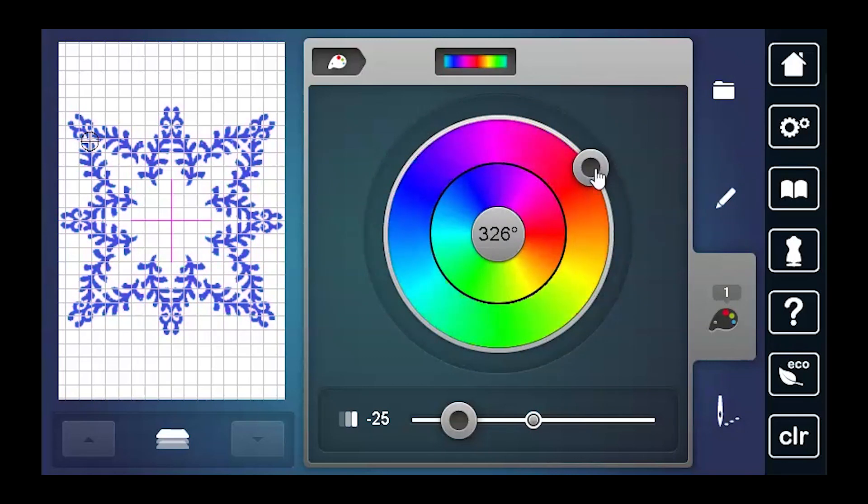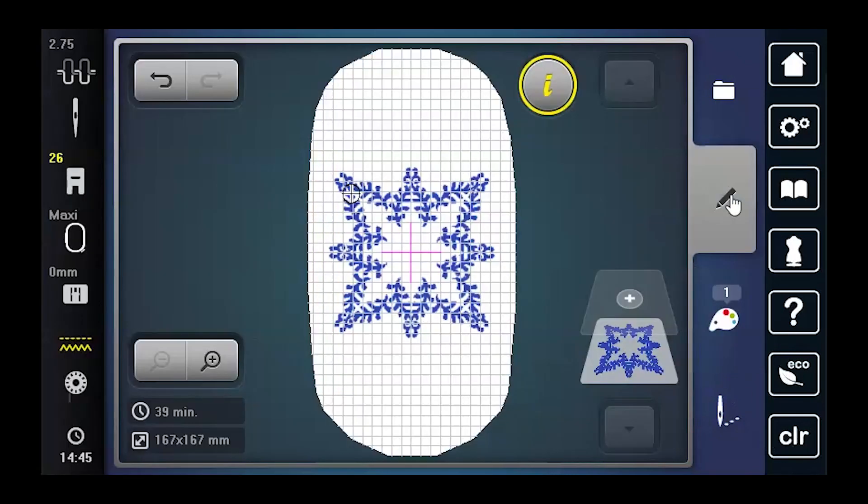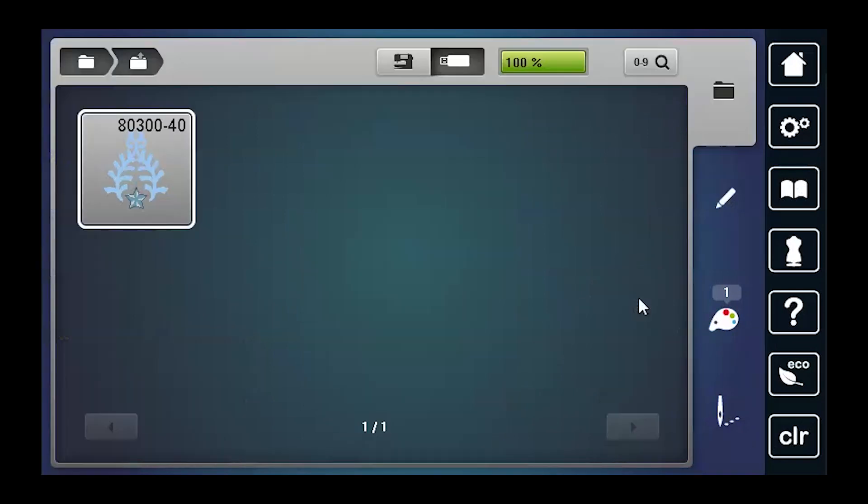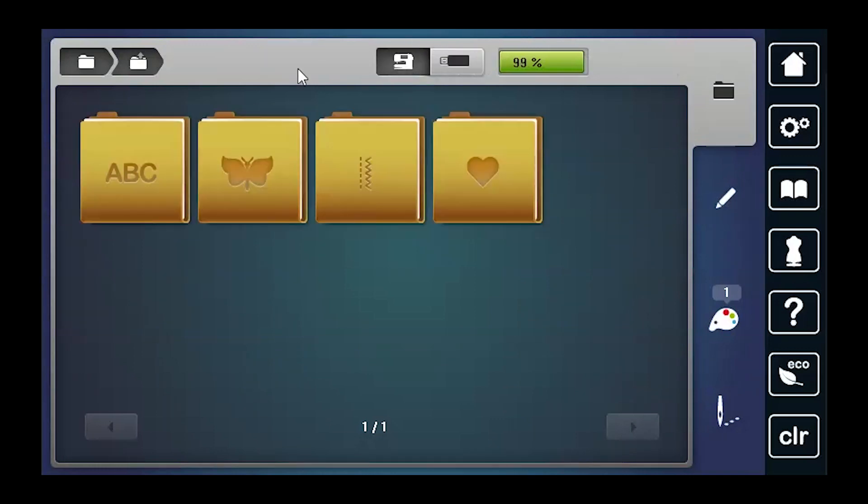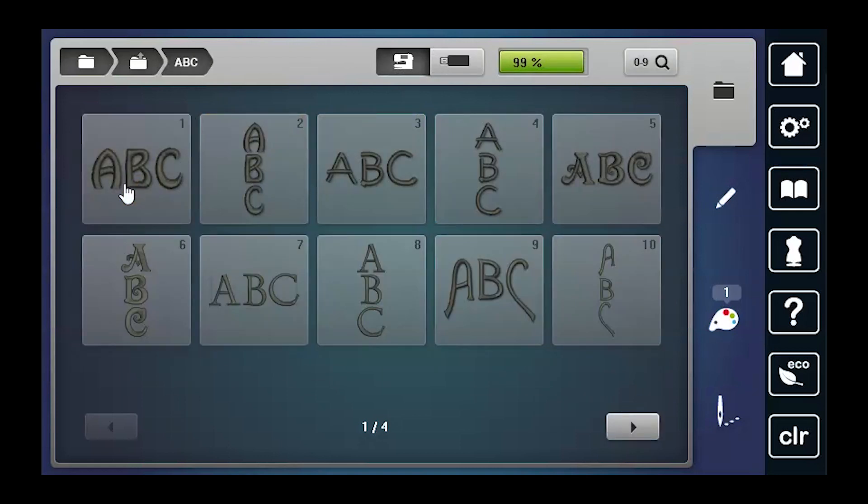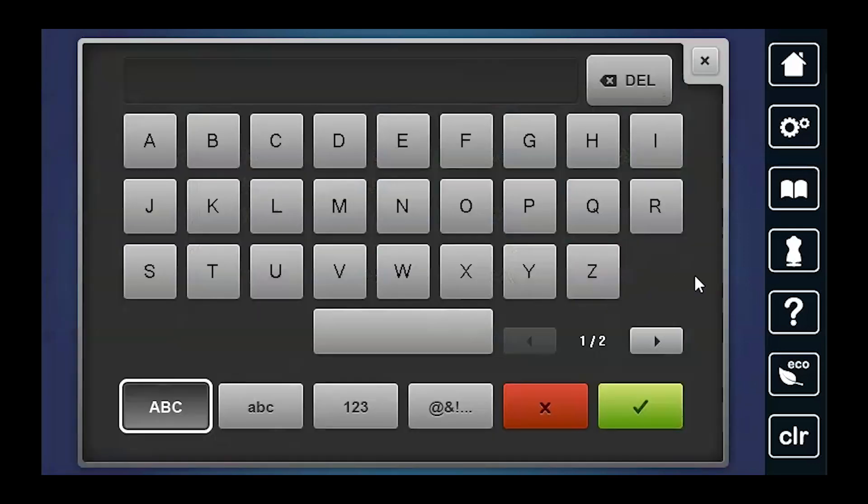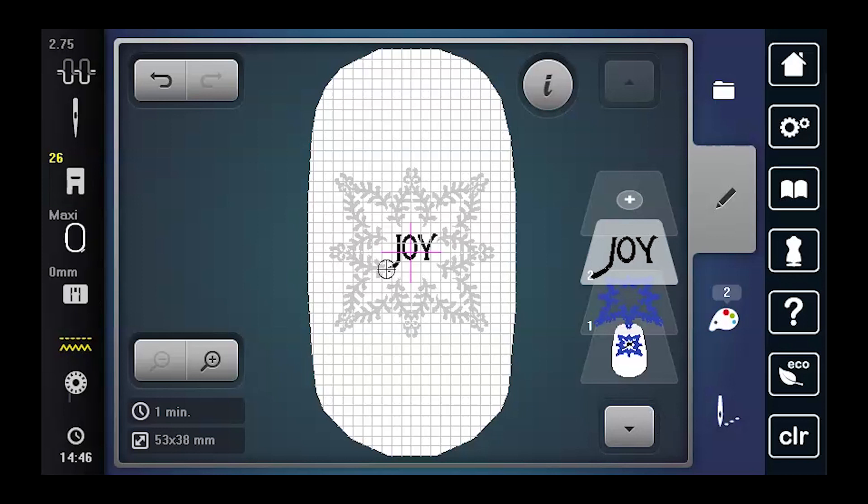This is ready to go, but we want to add our lettering. So we'll go ahead and we'll touch the add design option. It comes back to where my design was stored, but we're going to choose the machine and the alphabet folder. And then we're going to use number nine, which is Alice. That's the font we're using for this. And we're going to type in an uppercase joy, j-o-y. Confirm that.